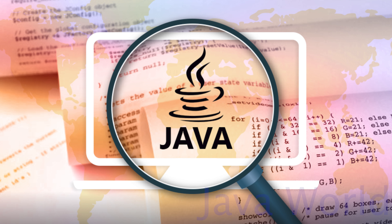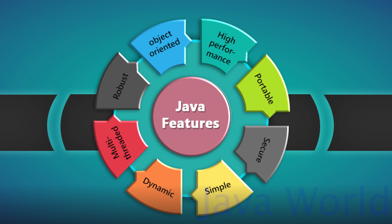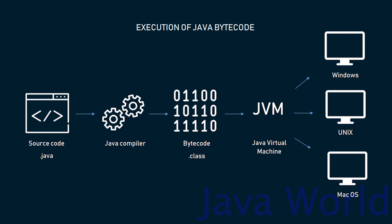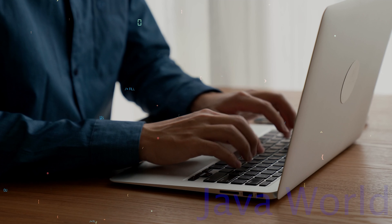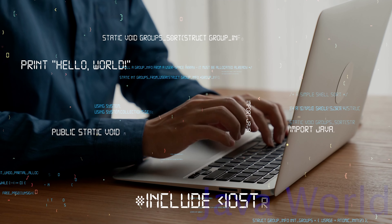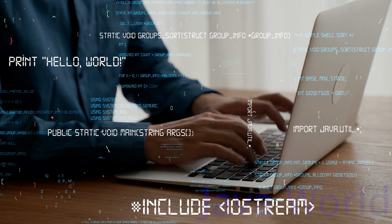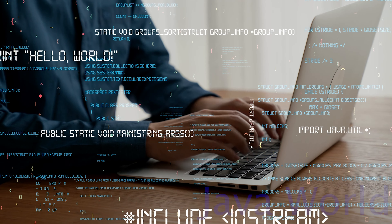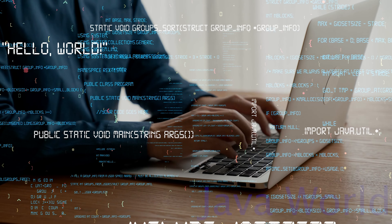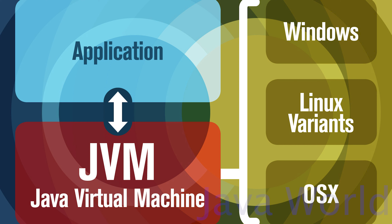Java is an object-oriented, high-level programming language. Java was created on the principles of being robust, portable, platform-independent, high-performance, multi-threaded, etc. Java applications are called WORA — write-once-run-anywhere. This means a programmer can develop Java code on one system and can expect it to run on any other Java-enabled system without any adjustment. This is all possible because of the JVM.